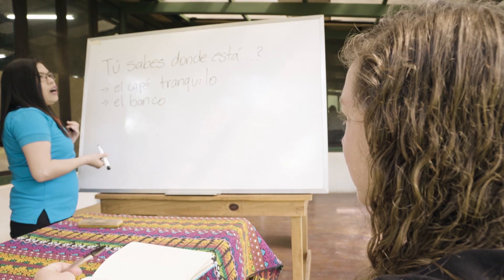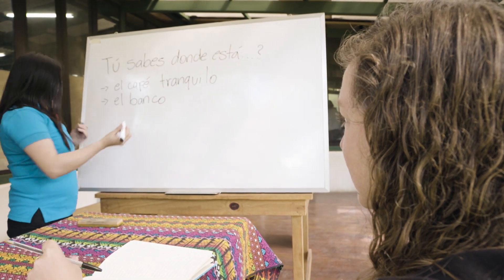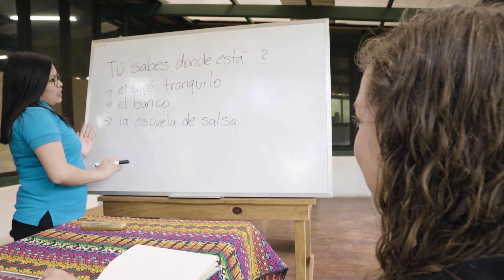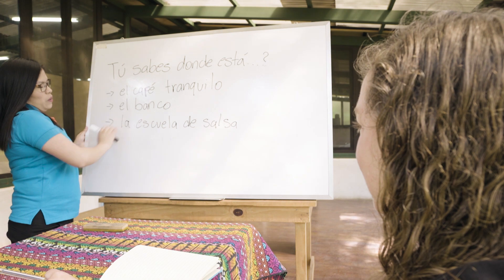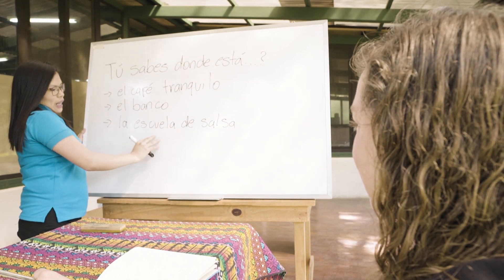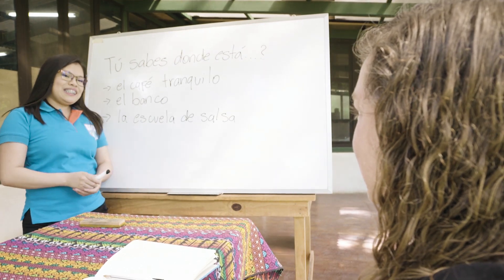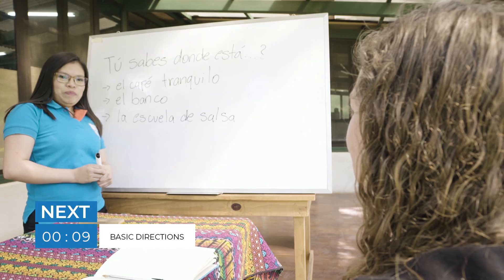If you want to say el banco, una escuela de salsa — okay. So the places you are interested in are el café, el banco, y la escuela de salsa. Let's pretend that you don't know me — what do you say to me? Hola, me llamo Courtney. ¿Tú sabes dónde está el café tranquilo?